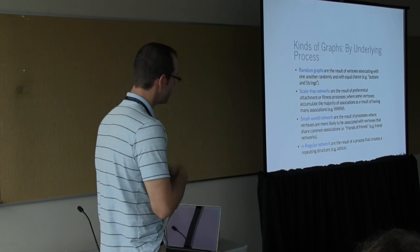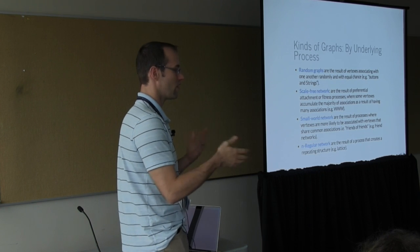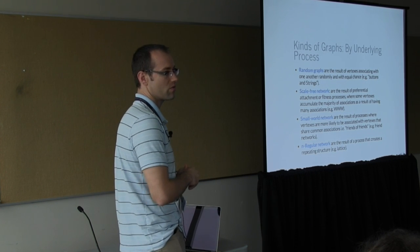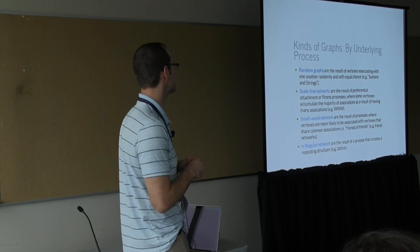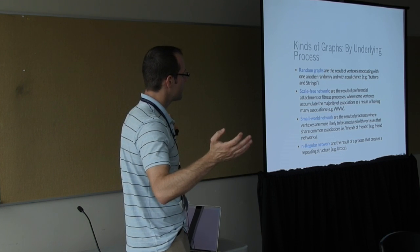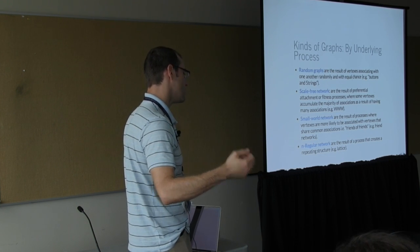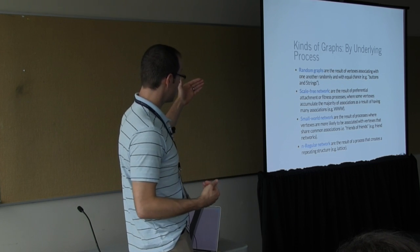So you can do things like community detection. Projection two is just projecting a different way, projecting group to group through individuals. Beyond those basic types of graphs, I hope that you play around with the code and start thinking of your problems and how to encode them into these objects.